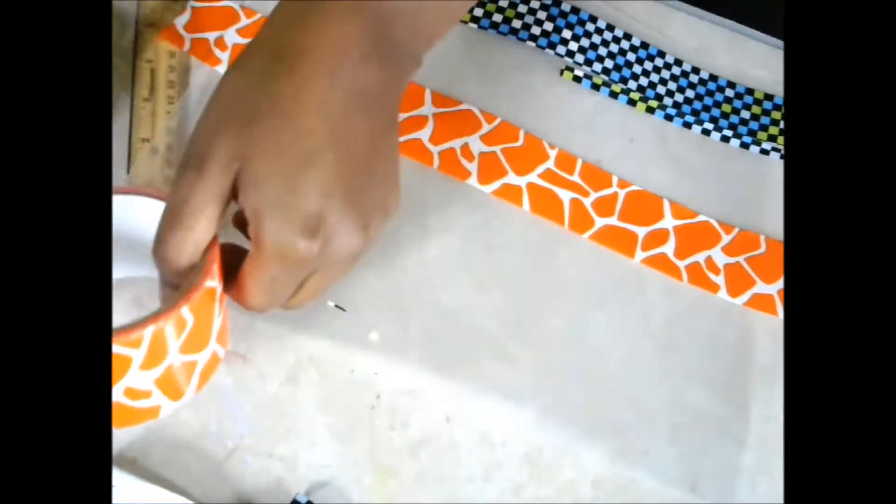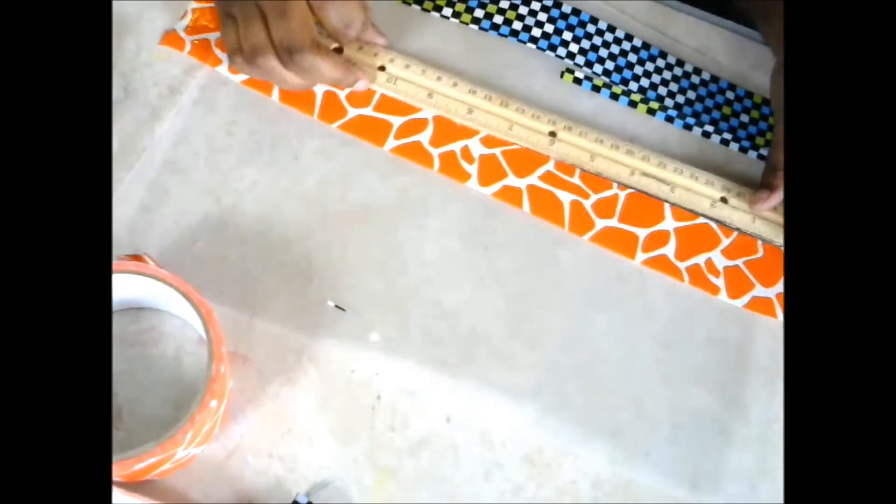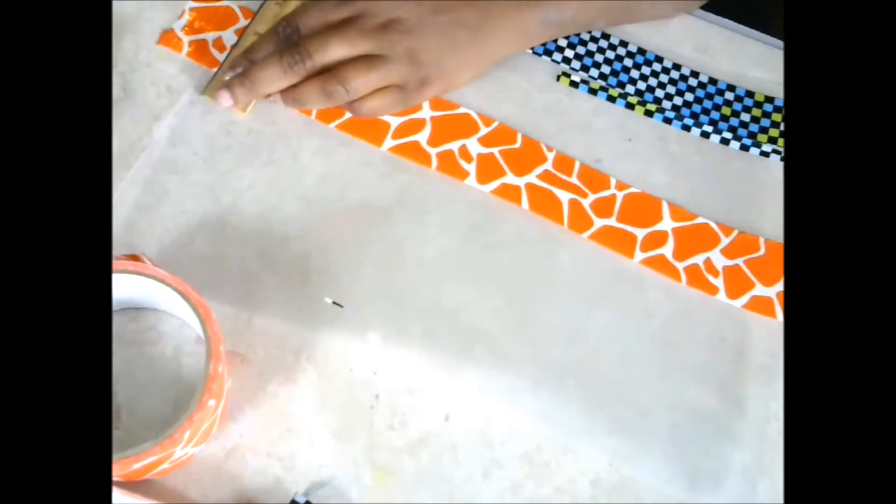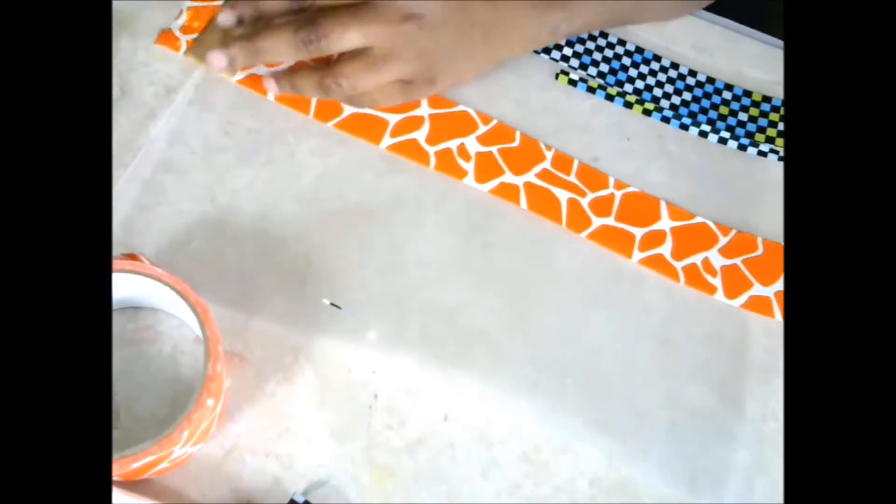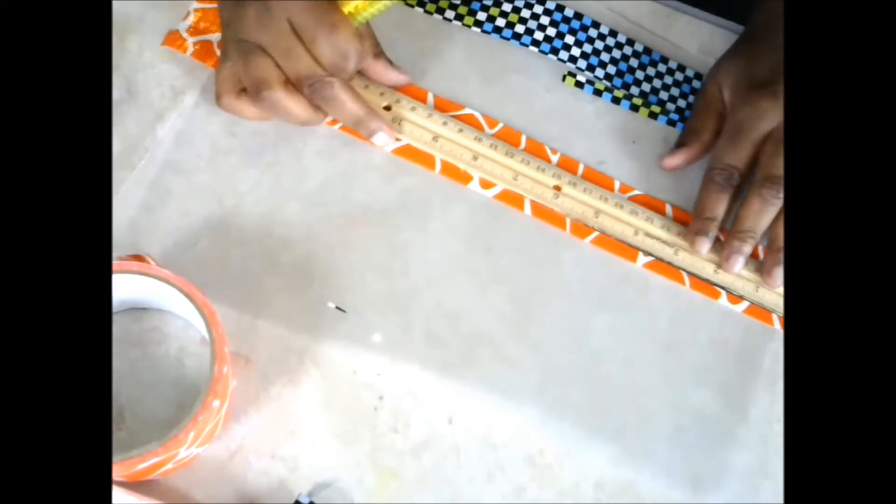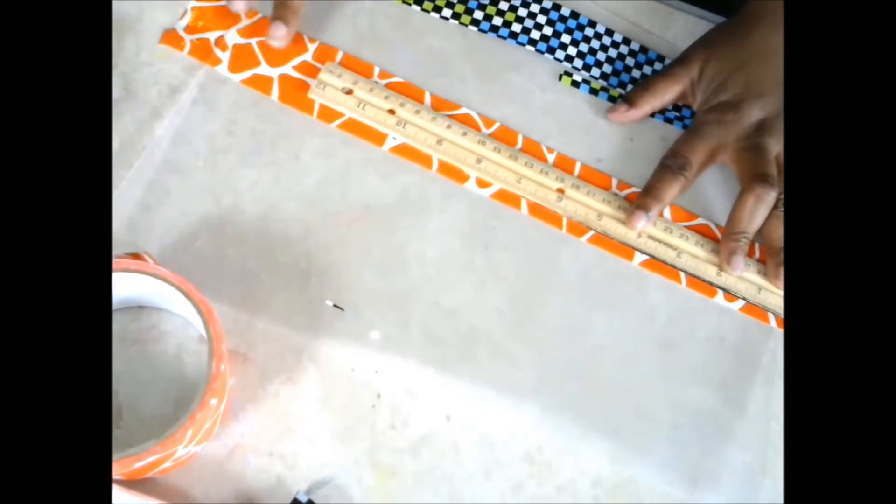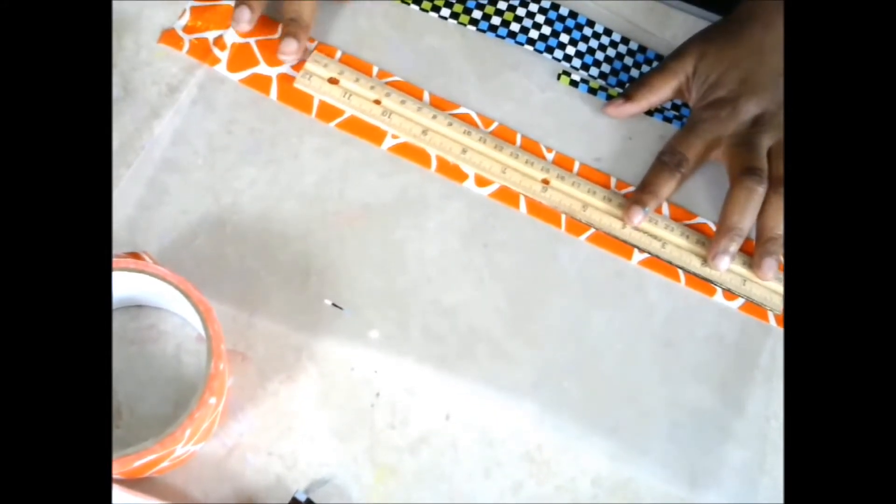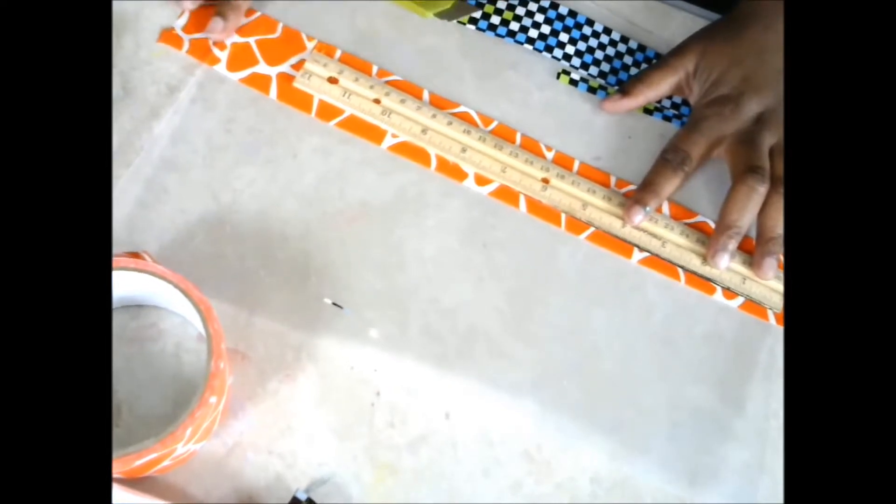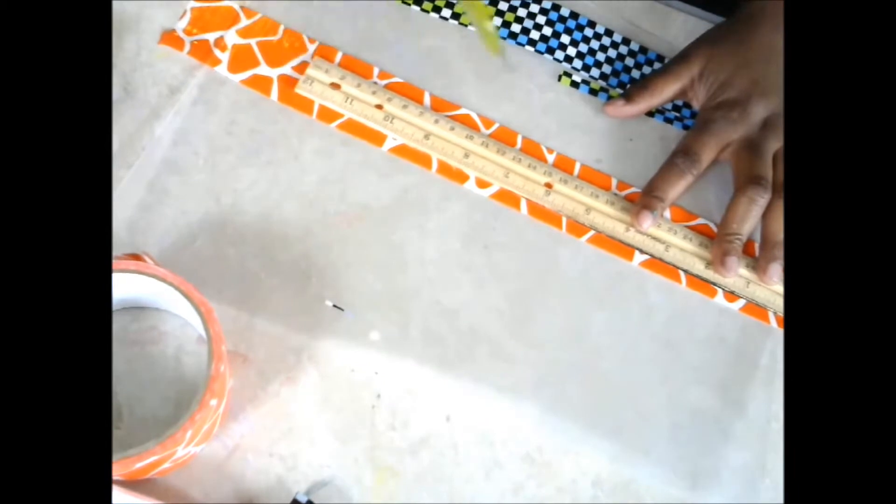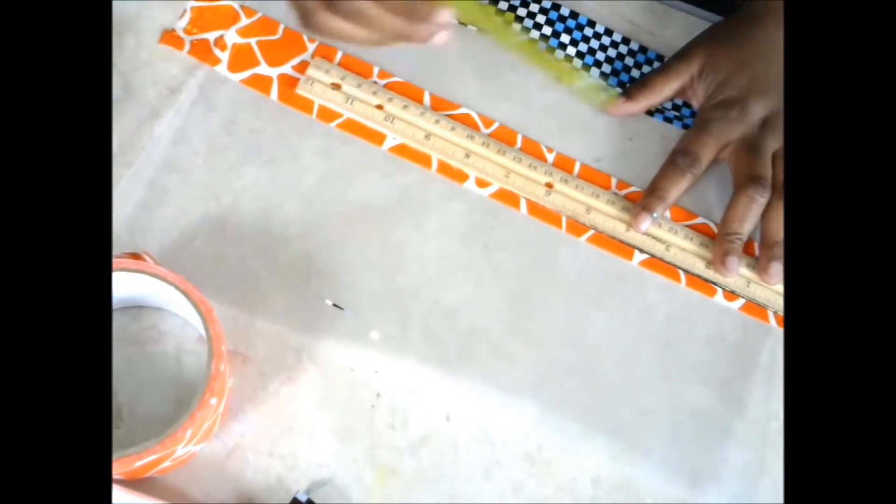You're going to take your ruler and make strips maybe about a half an inch, but it doesn't have to be perfect at all. I laid this out about 15 inches long but it doesn't need to be that long. I'm probably only going to go to 12 just to make it easier for myself.